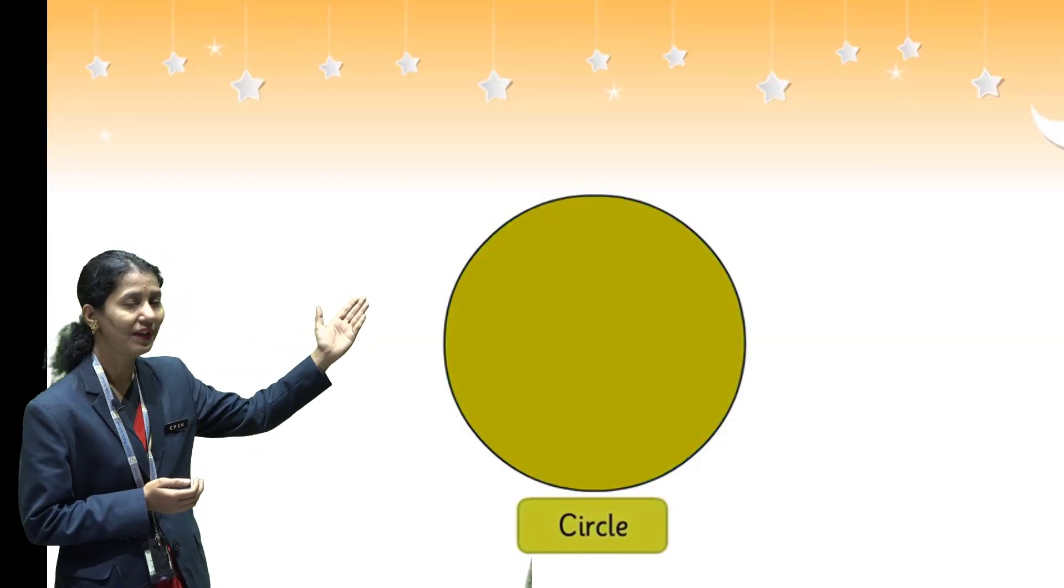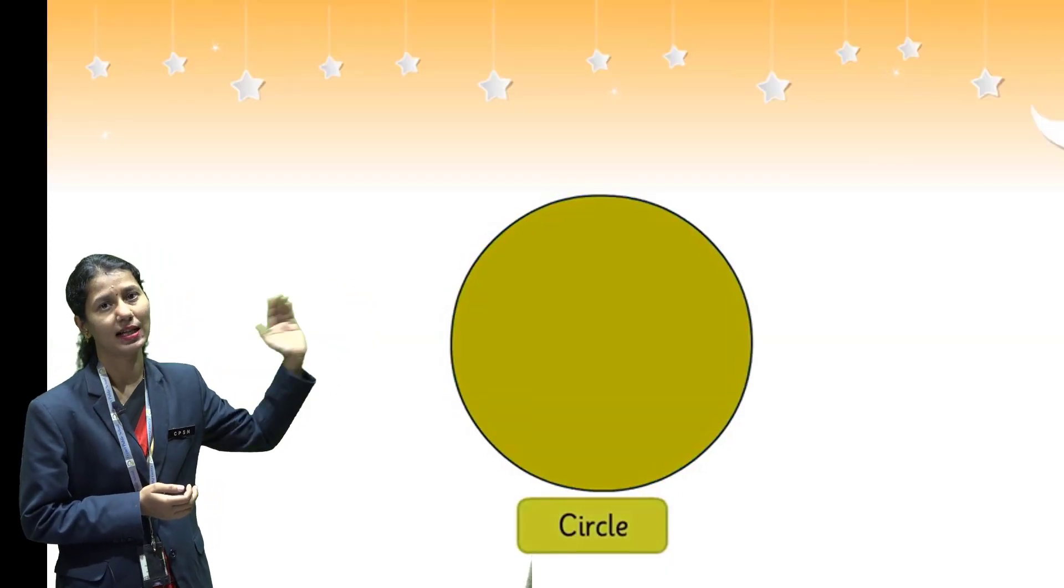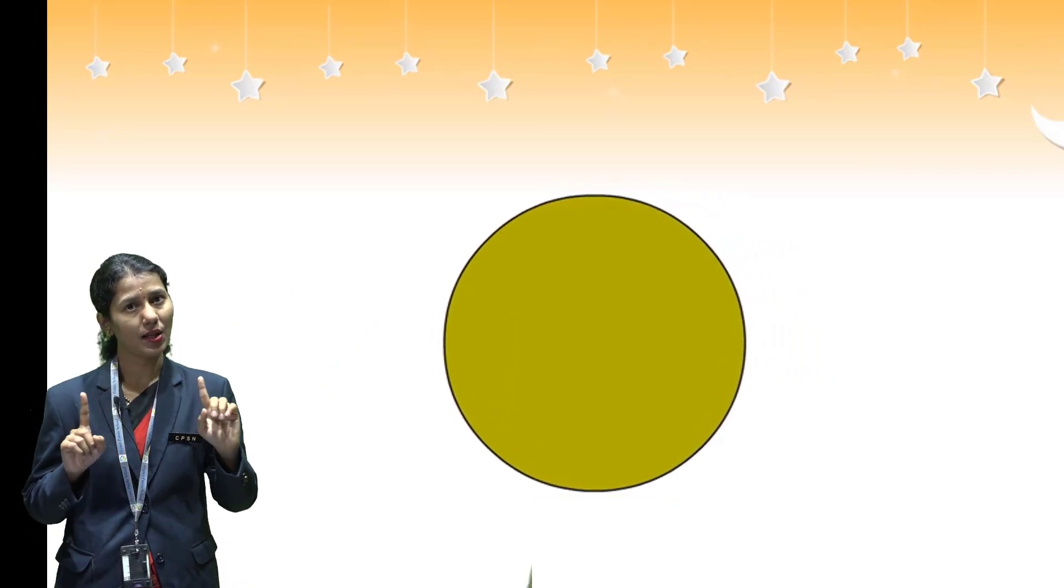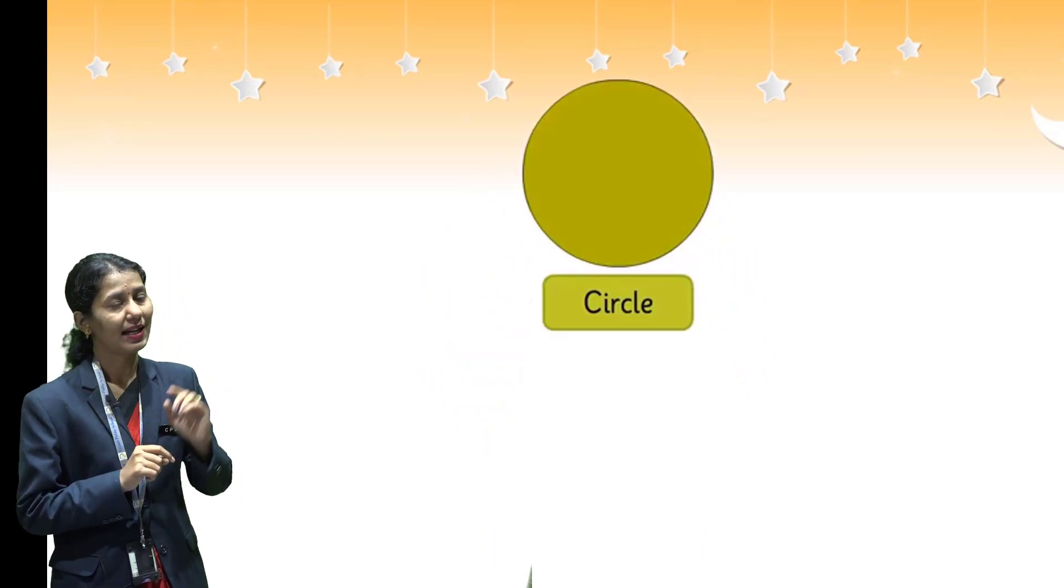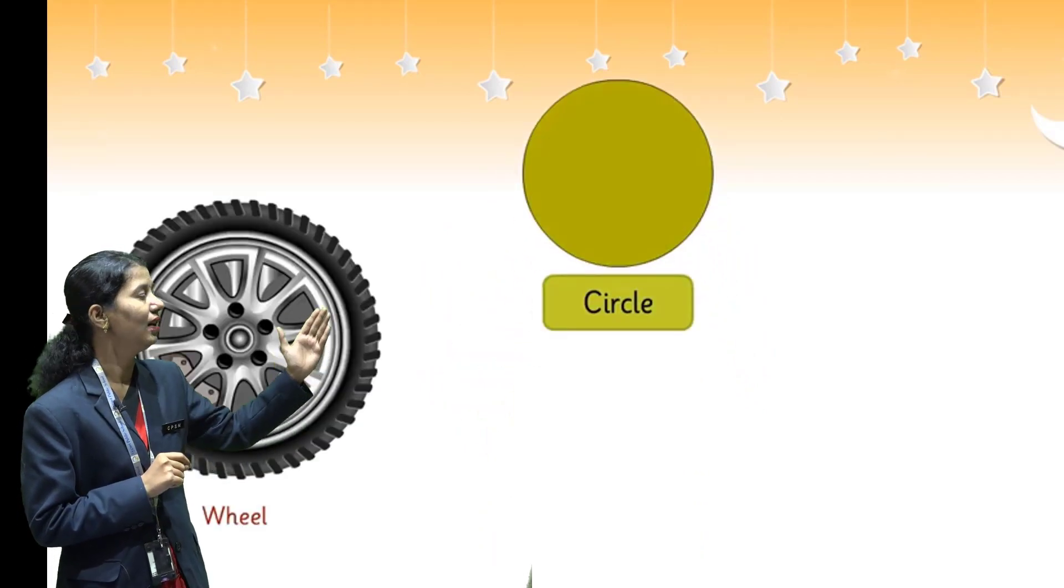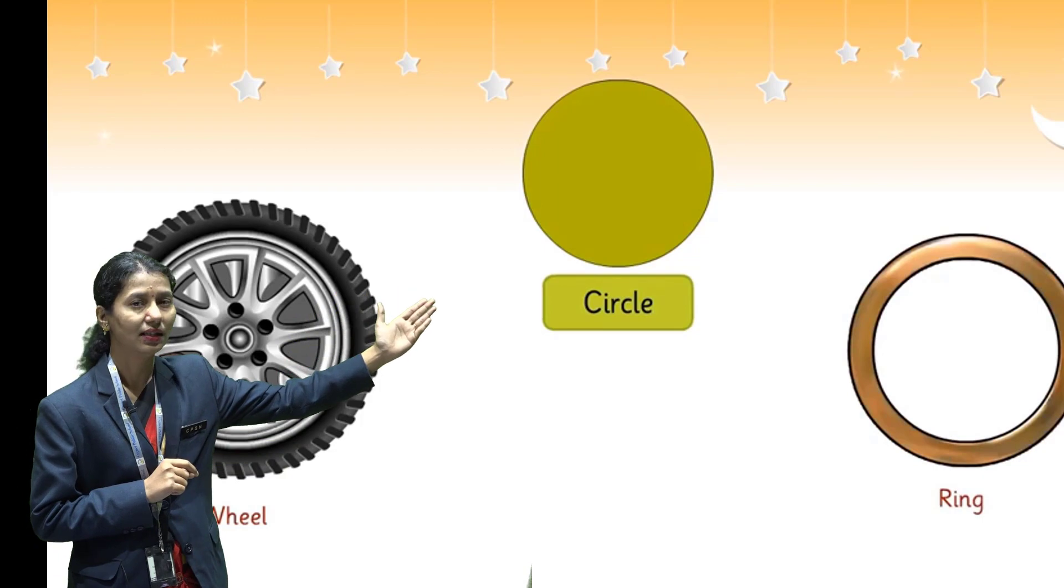So, this is the first flat shape. It's called circle. Circle has no sides and no corners. Circle is always round. Examples of circles are a wheel and a ring.